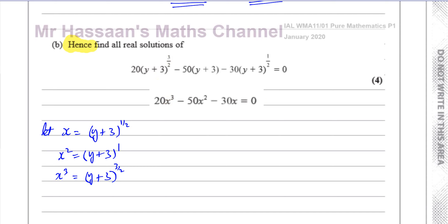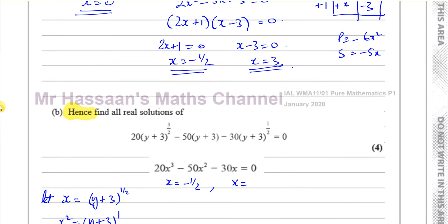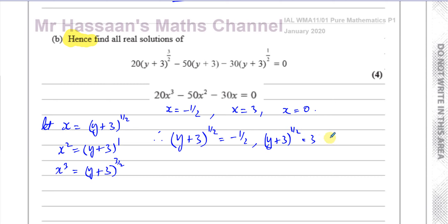Since x = (y+3)^(1/2), the three solutions x = 0, x = −1/2, and x = 3 give us three equations: (y+3)^(1/2) = −1/2, (y+3)^(1/2) = 3, and (y+3)^(1/2) = 0.